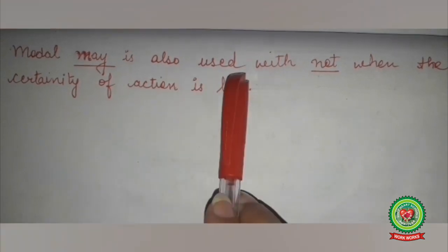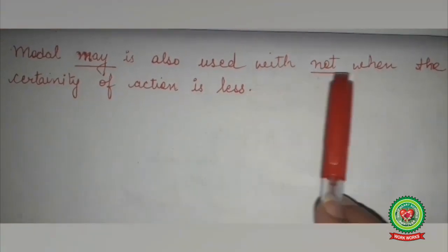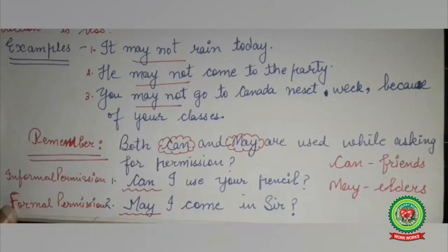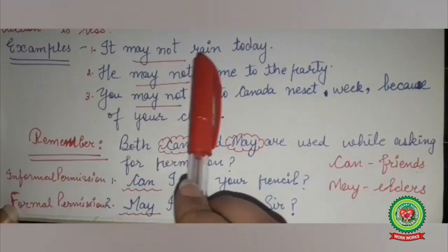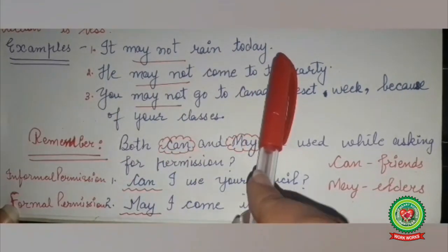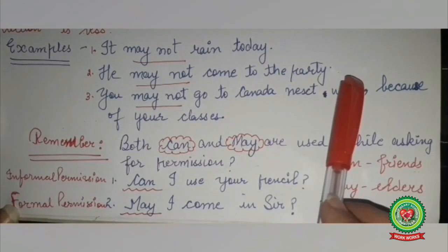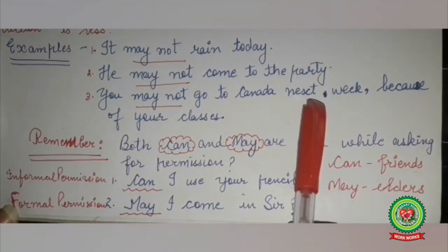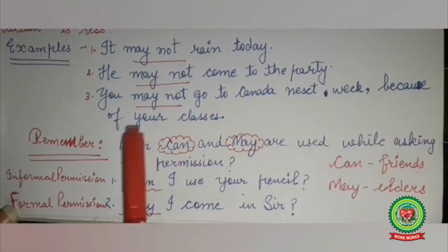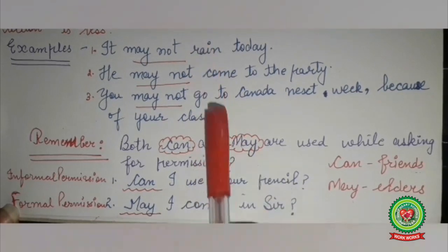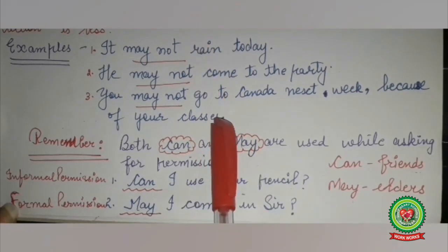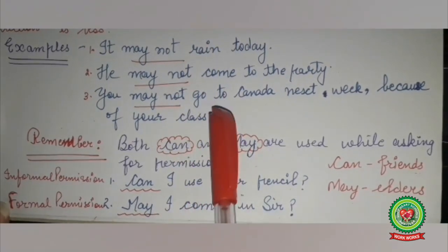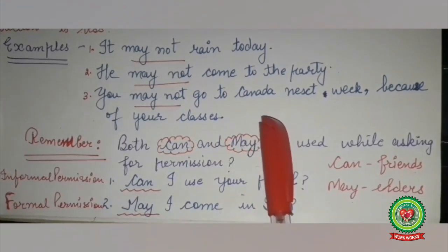Modal may is also used with not when the certainty of action is less. For example: It may not rain today. He may not come to the party. You may not go to Canada next week because of your classes. In all these sentences, may not is showing that the certainty of action is less.